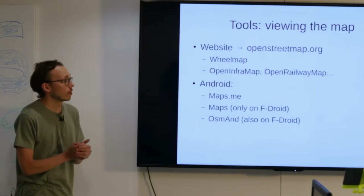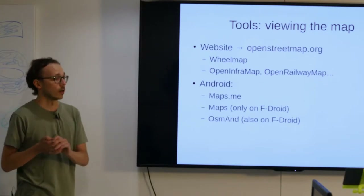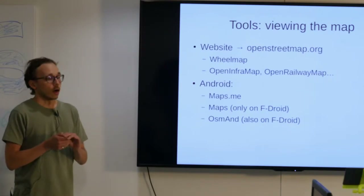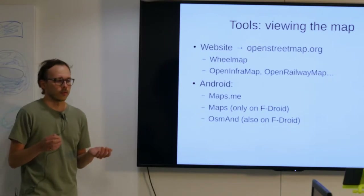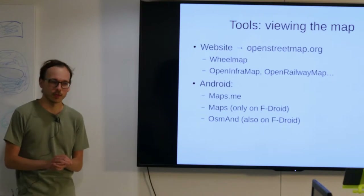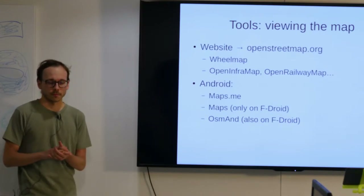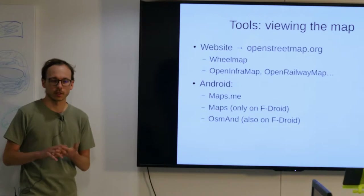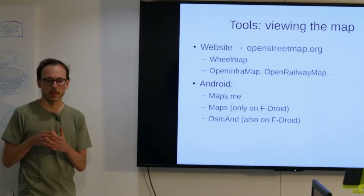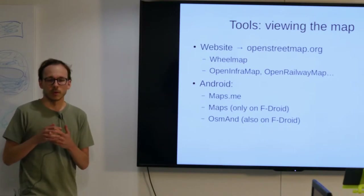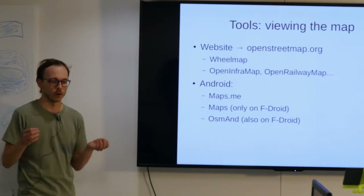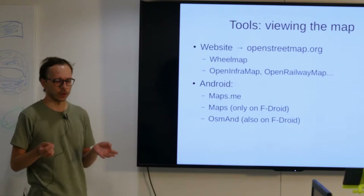Now, an introduction to actually using it. Probably the main thing people land on is the website OpenStreetMap.org. It's a raster map, basically like any map you may have seen on the internet. It's got a search functionality that exposes one of the search APIs, so you can search for addresses and names of things. It's also got a basic router and hosts a whole bunch of other layers.